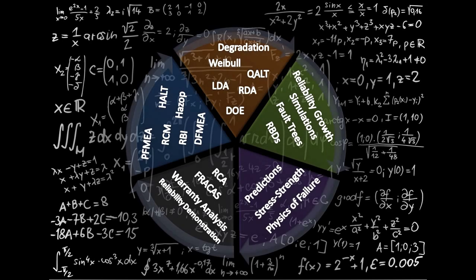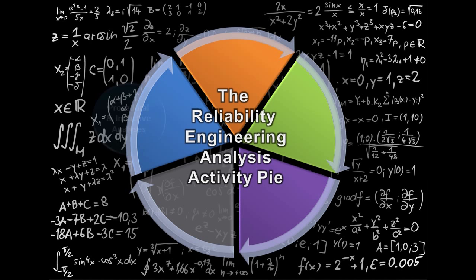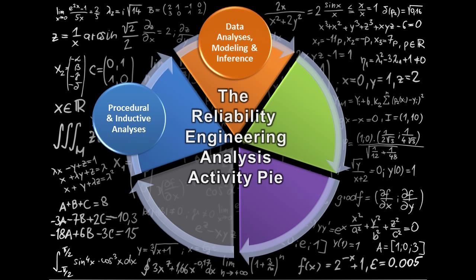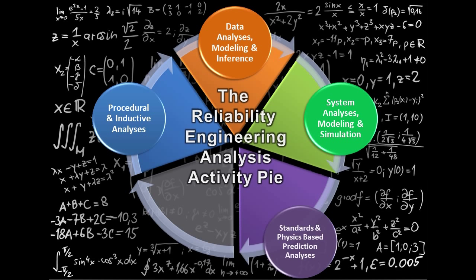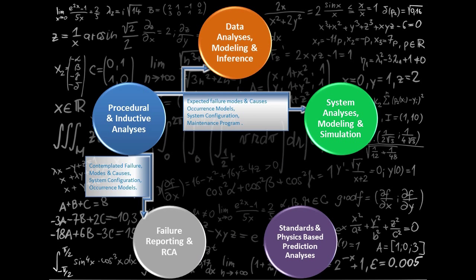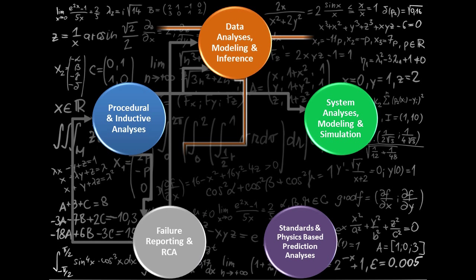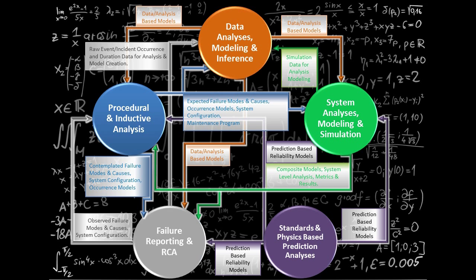What I wanted to point out is that instead of looking at each one independently, let me put them in a pie — a reliability engineering analysis activity pie. Within that pie, I'll create a group called procedural inductive analysis — put your RCMs, your FMEAs, other activities in that piece. I'll group all my analysis procedures over here — data analysis and modeling, Weibull, accelerated testing. Over to your system analysis — RBDs, fault trees, simulations. Physics of failure, prediction. FRACAS, root cause analysis, failure reporting. Then start asking: what in this activity could be useful to another activity?